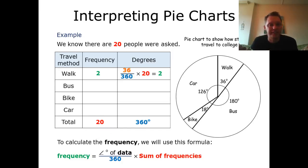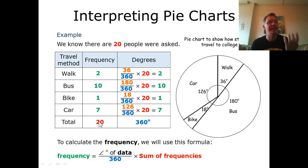So 36 divided by 360 times 20 equals 2. So two people of the 20 said that they walked to college. Carrying this on through all the rest, I end up with 2, 10, 1, and 7. Adding these together they give me 20, so I've got a good idea that my calculations are correct because these added together should equal 20.